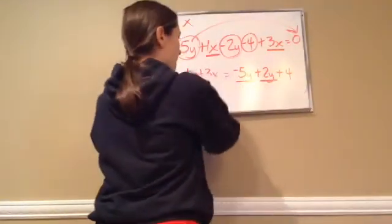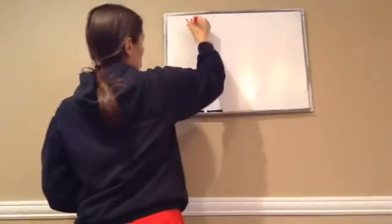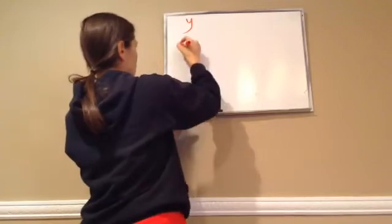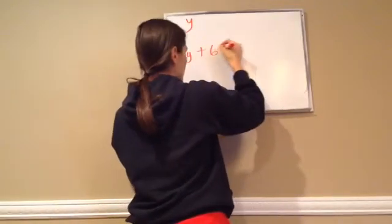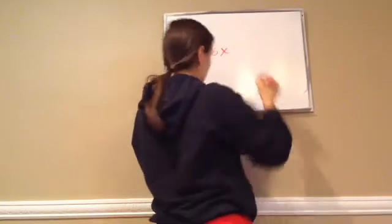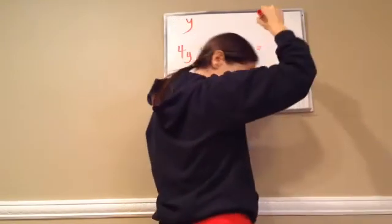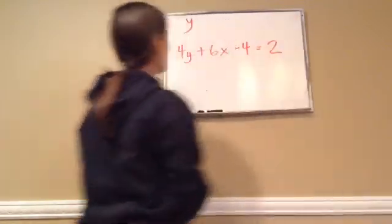All right, last one. Here we go. So this one wants us to solve for y, and here's what it gives us: 4y plus 6x minus 4 equals 2.